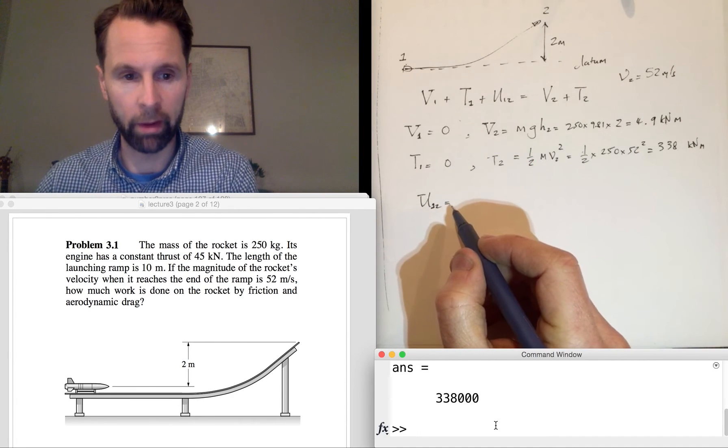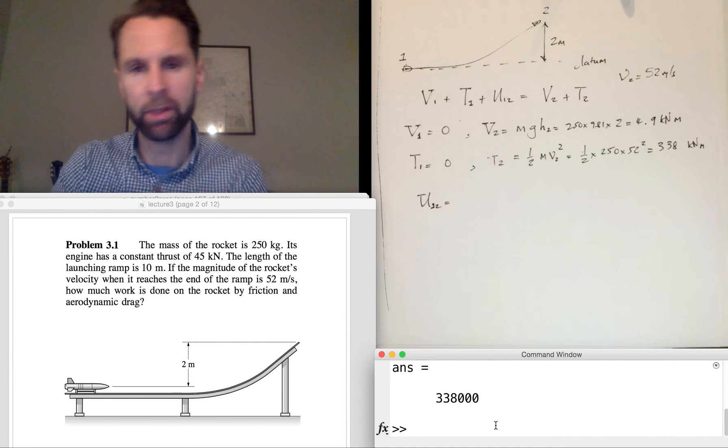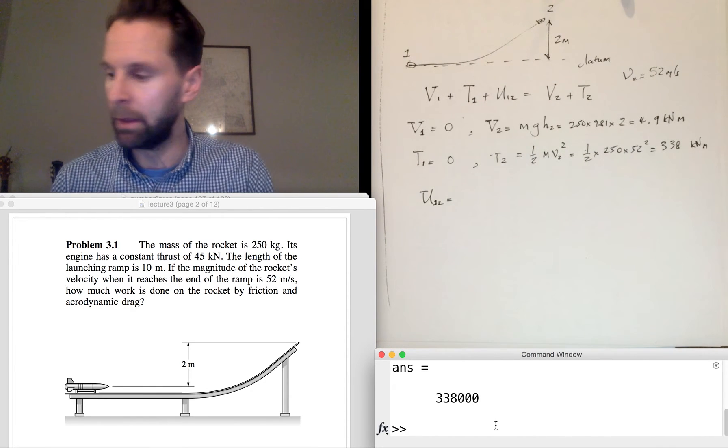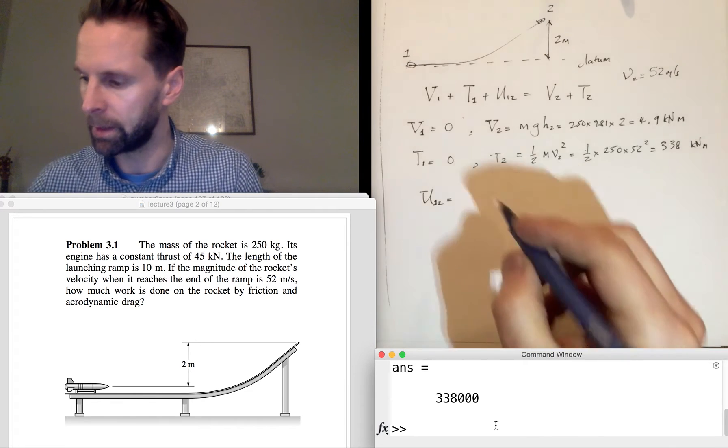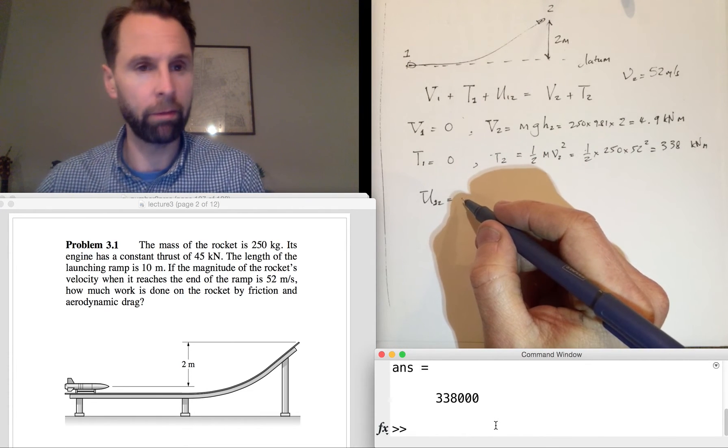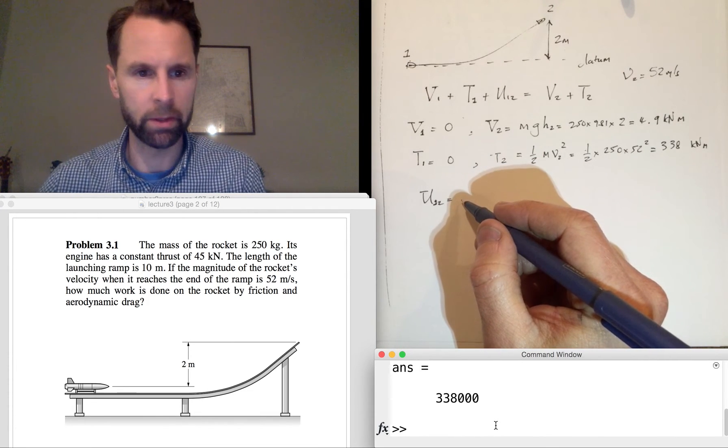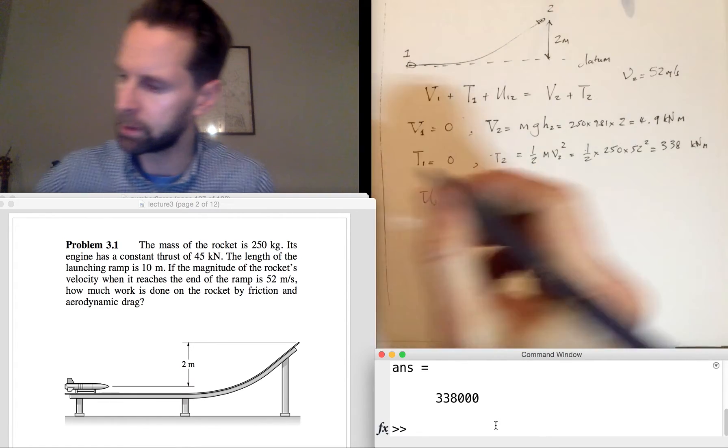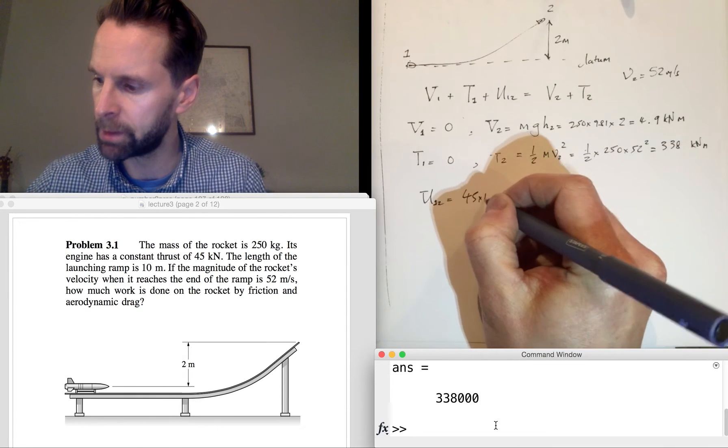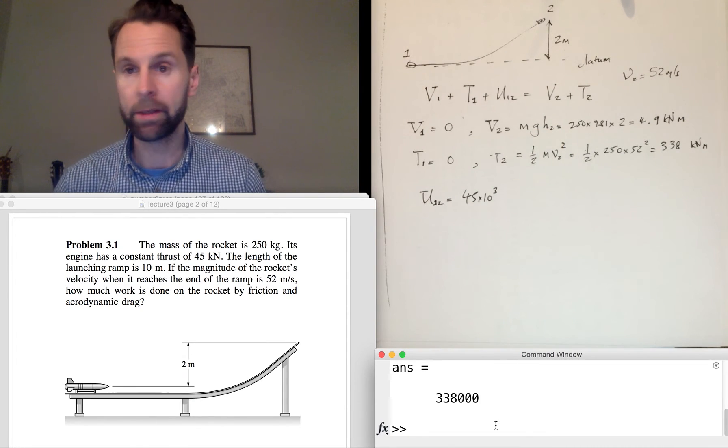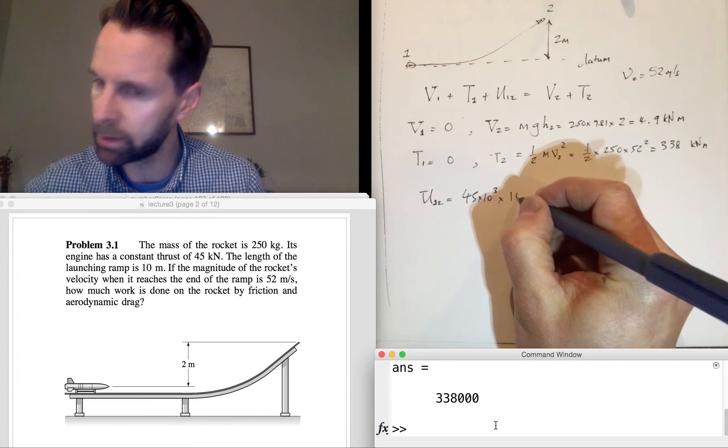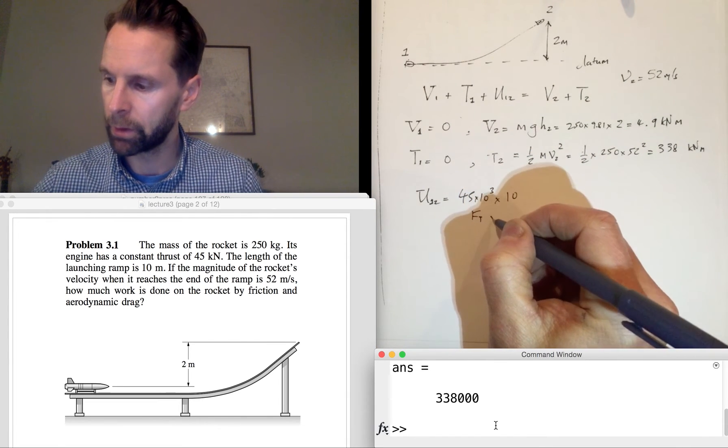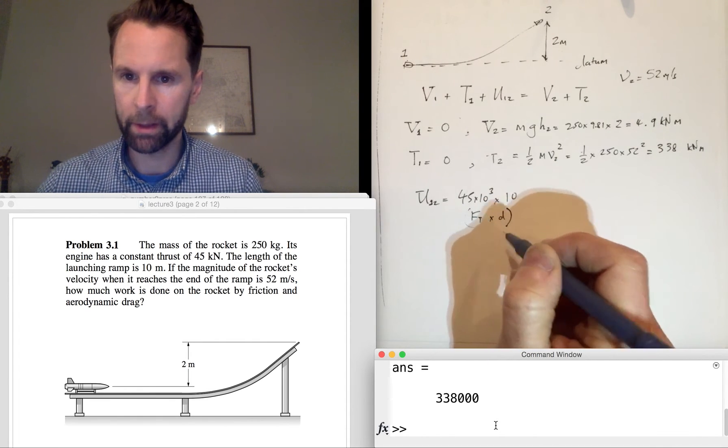So U12 is equal to—so this is the work done on the rocket between Position 1 and Position 2, and that's not including conservative forces obviously. So that's the thrust force times distance. It's a constant force in the direction of motion, we can just use force times distance. So the thrust is 45 times 10 to the 3, and the distance it travels is 10, so that's thrust force times distance. That's given you the work done, and it's positive because it's obviously increasing the kinetic energy of the rocket.